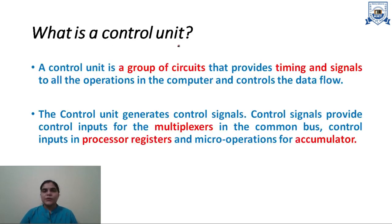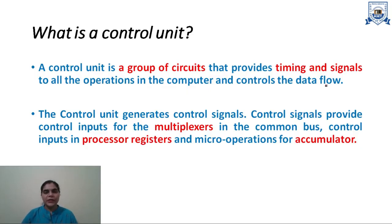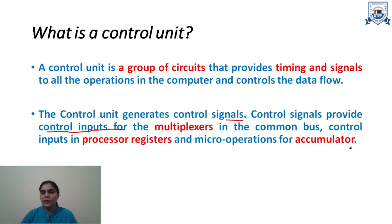What is a control unit? A control unit is a part of the processor and it is a group of circuits that provides timing and signals to all operations in a computer and controls the data flow. Control unit generates control signals, which provide control inputs for multiplexers in the common bus, control inputs in processor registers, and micro operations for the accumulator.